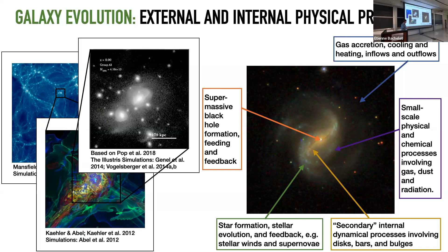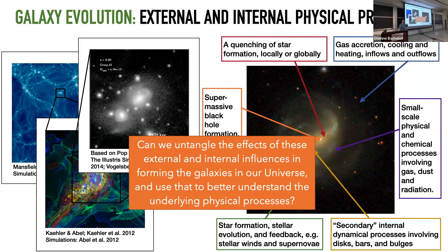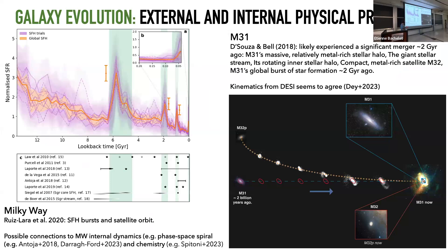These external and internal processes are very correlated, and we have beautiful examples from nearby work. In our own Milky Way, the recovered star formation history of the disc shows peaks that seem to coincide with the orbital pericenter passage of the Sagittarius dwarf galaxy, suggesting that external and internal processes are very closely related.